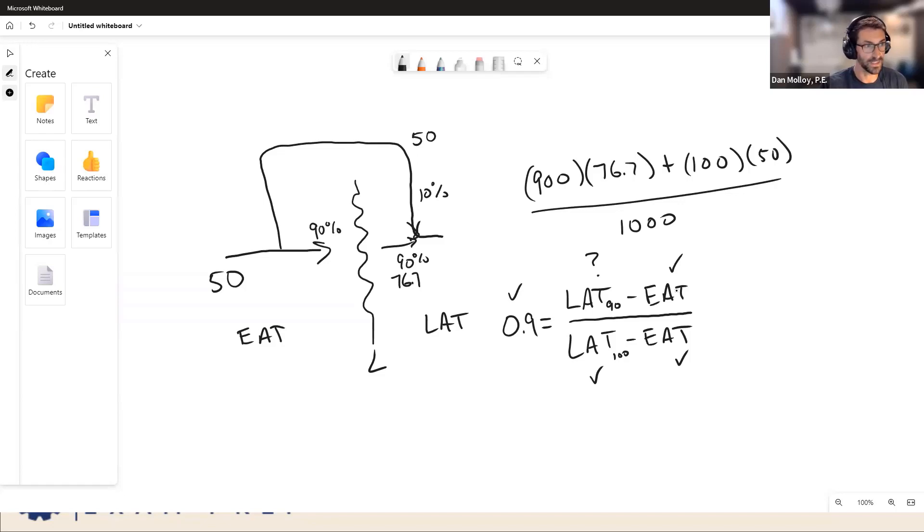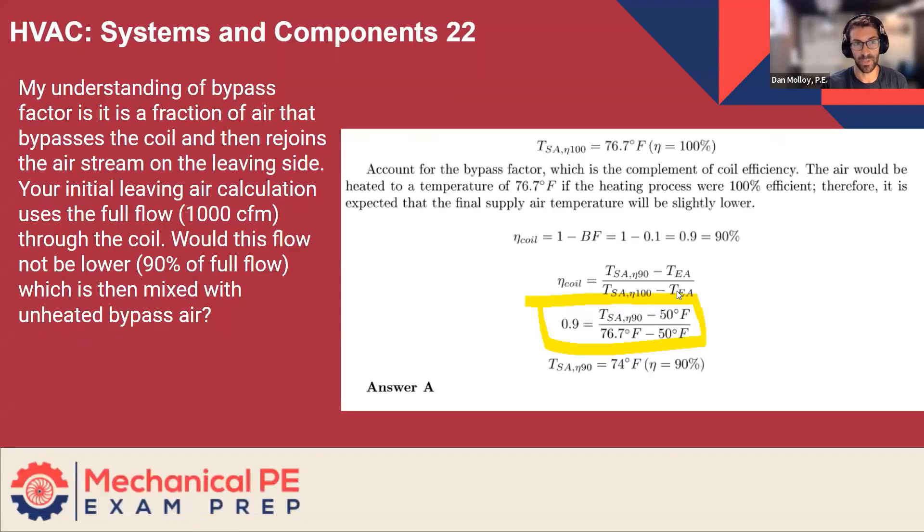And physically it's a lot more like what really happens because you can actually imagine that 10% of the volume of this air, the mass of this air, is getting past the coil without being impacted. So it's getting by and mixing. I shouldn't say it's like that. It is that, but from a calculation perspective, the concept of coil efficiency can be carried out in this manner. And that's perfectly acceptable to think.